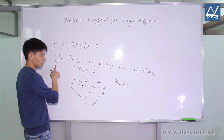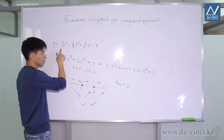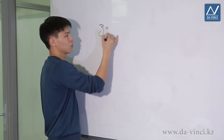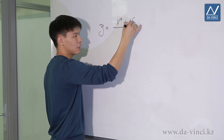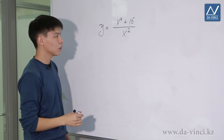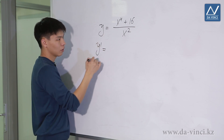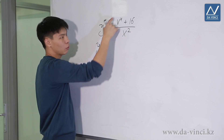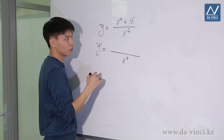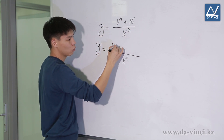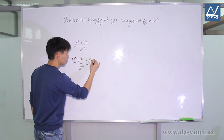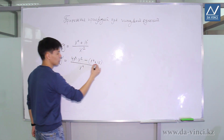We can find the corresponding minimum value by substituting x = 0 into the function. Let's consider one more example: y = (x⁴ + 16) / x². We need to find the extremum points and intervals of increase. First, we find the derivative using the quotient rule: the denominator squared is x⁴, and the numerator is the derivative of the top, 4x³, times the bottom, x², minus the top (x⁴ + 16) times the derivative of the bottom, 2x.